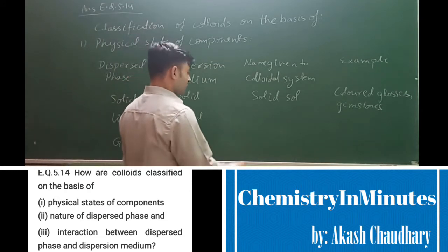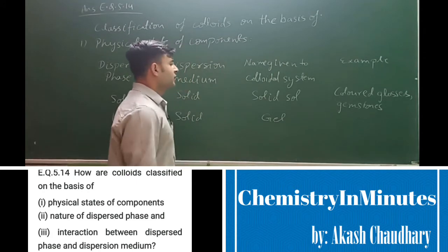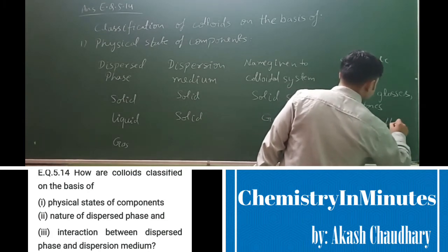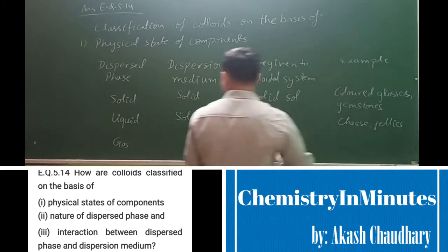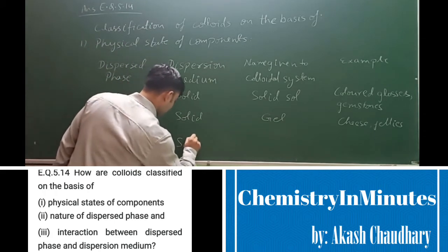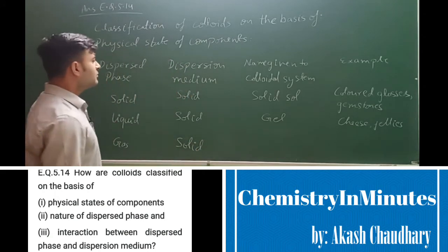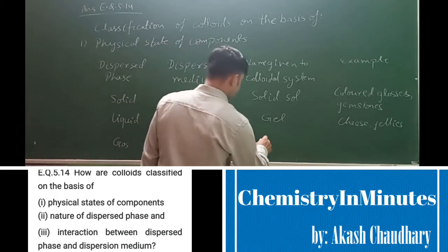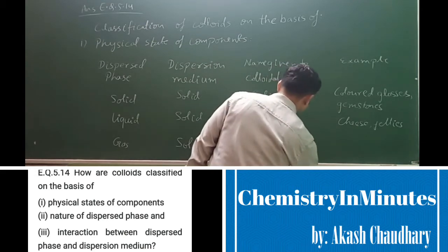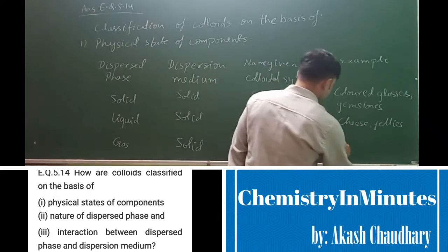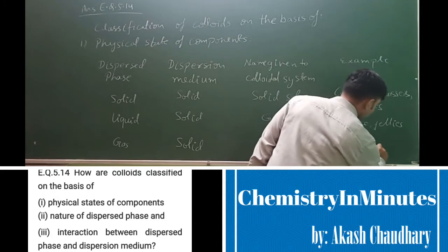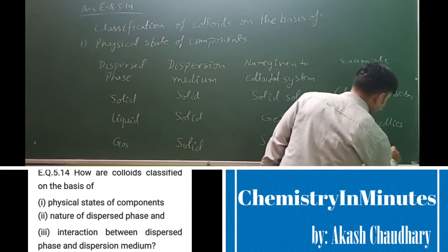The name of such a colloidal system is gel, and examples are cheese and jellies. For a gaseous dispersed phase with a solid dispersion medium, the name of such a colloidal system is solid sol. An example of such a colloidal system is pumice stone and coal rubber.